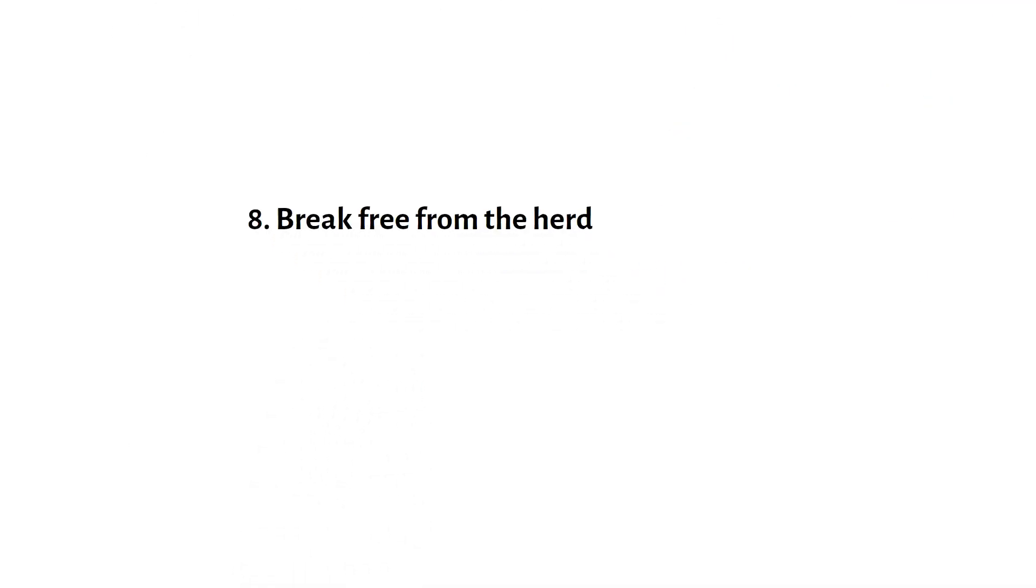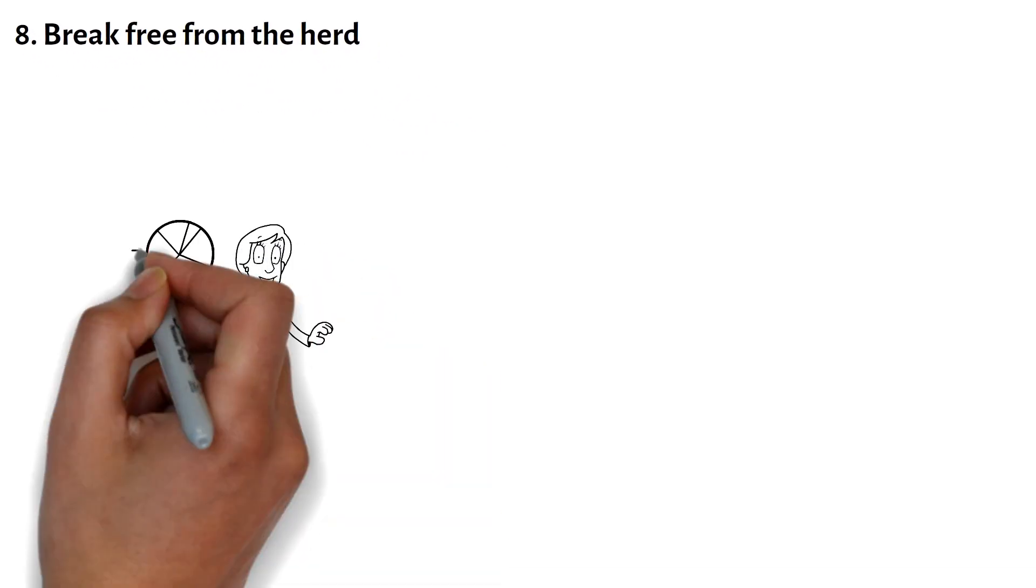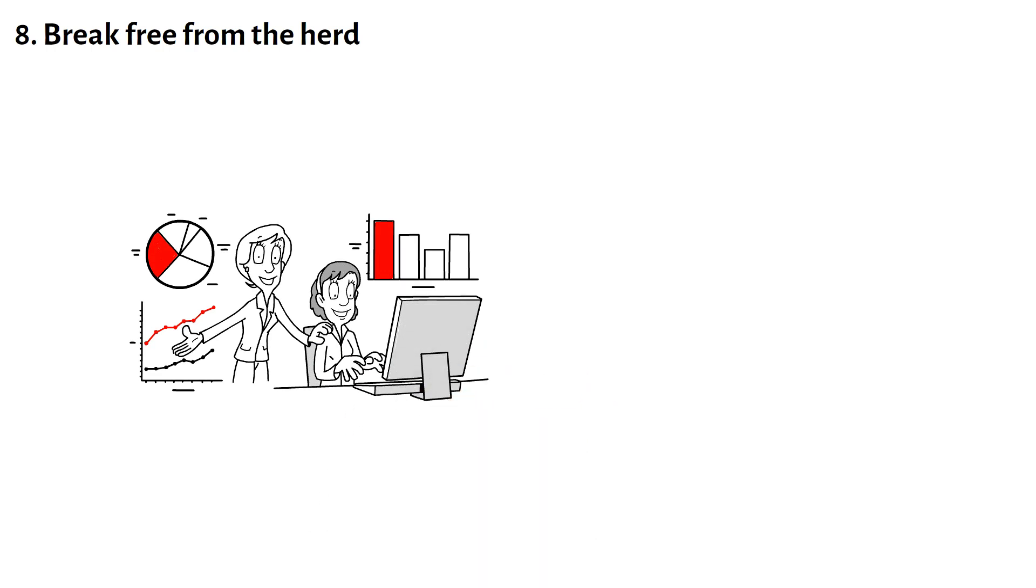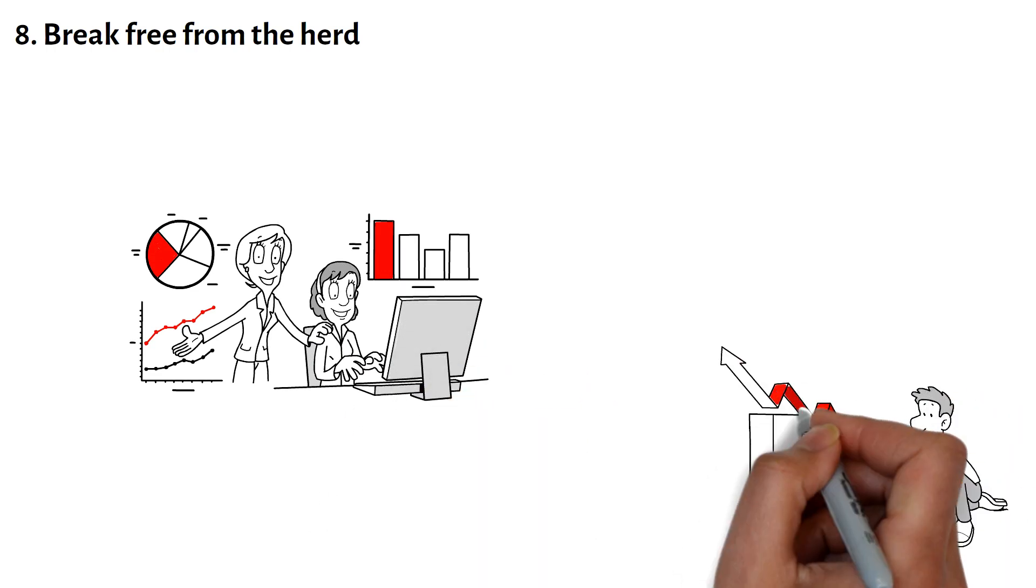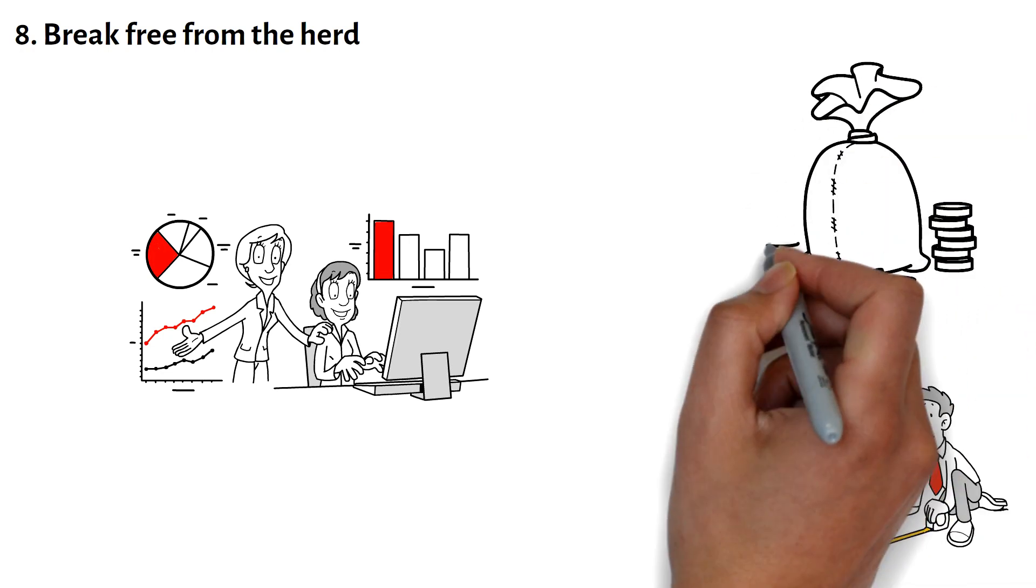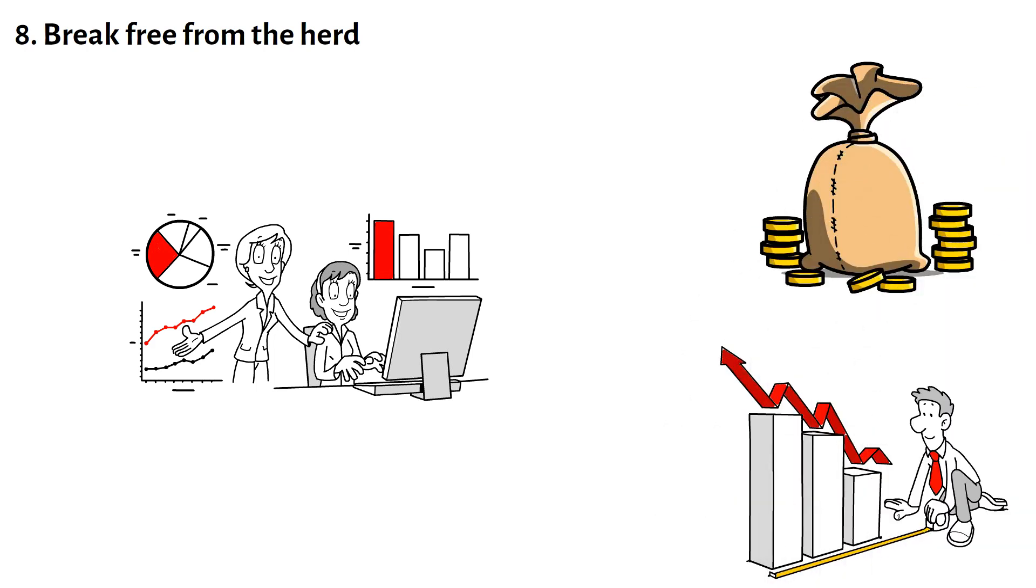8. Break free from the herd. Investment decisions are often influenced by market trends and herd mentality. It can be tempting to follow the crowd and make investment choices based on what others are doing. However, if you want to retire rich, it's important to break free from the herd and make informed and rational decisions.